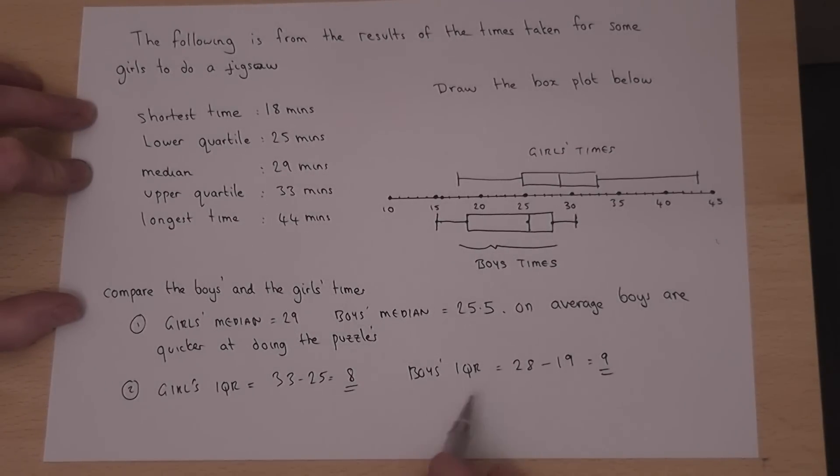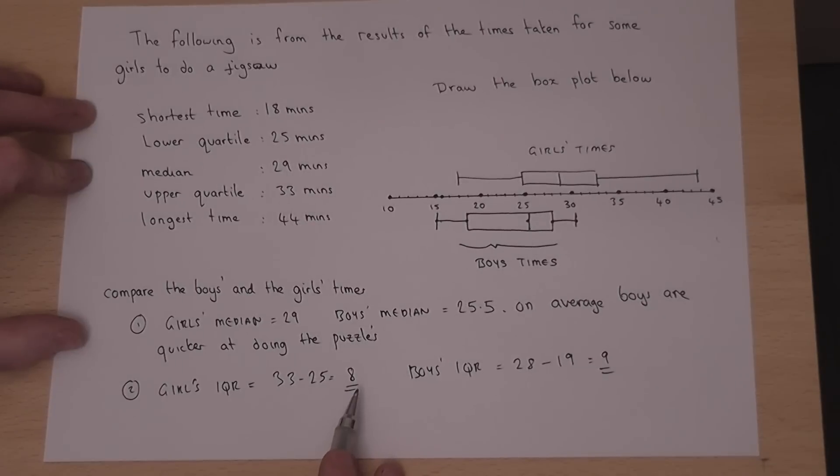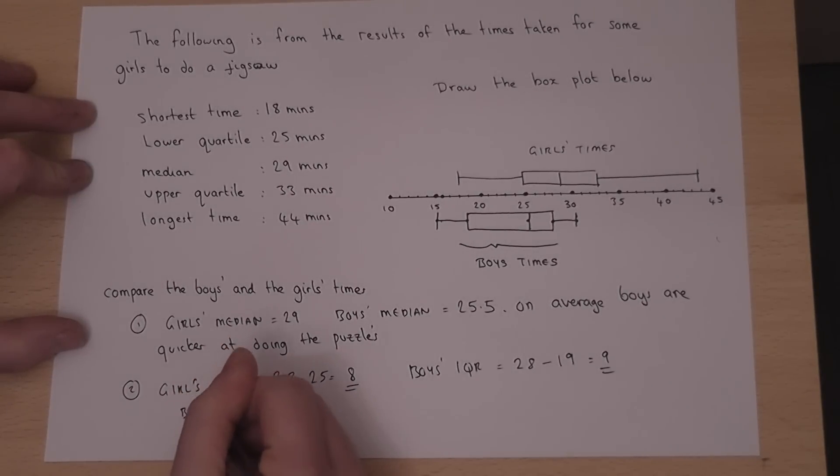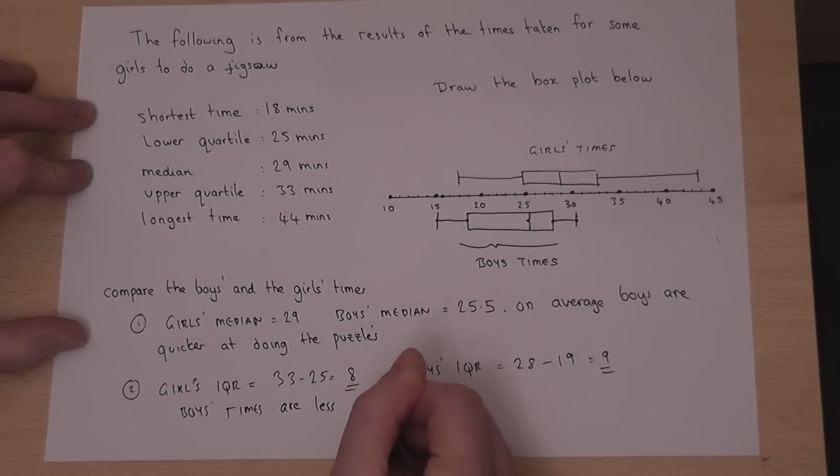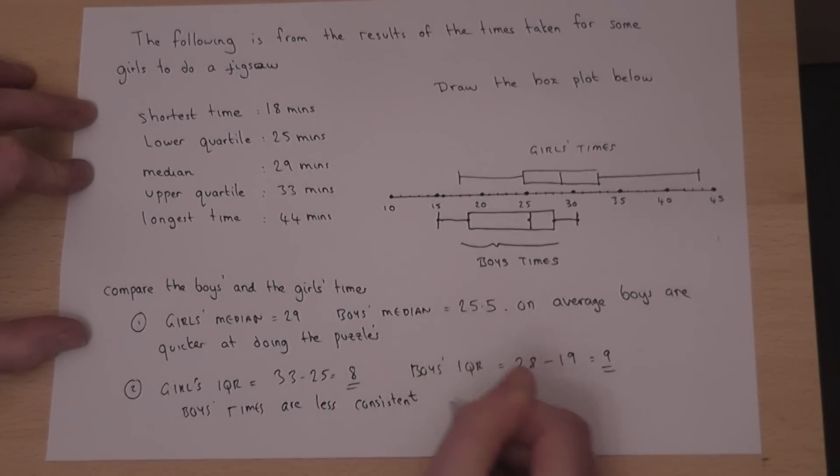So their interquartile range is larger than the girls'. So this means that even though their time, on average, is slower, the boys' times are less consistent than the girls'.